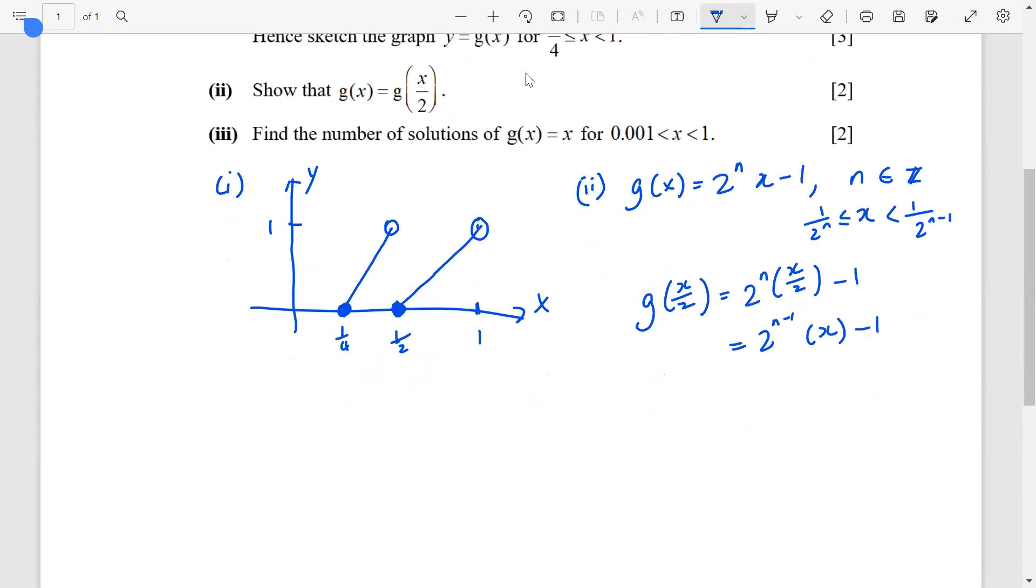is 2 power n(x/2) minus 1 equals 2 power n minus 1 times x minus 1. In this case, the domain is such that x/2 is between 1 over 2 power n to 1 over 2 power n minus 1. So, x is between 1 over 2 power n minus 1 and 1 over 2 power n minus 2. So, here, you can actually use words to explain or you can continue to use if you follow the school method, you'll be using the algebra to explain. Both are okay, actually.